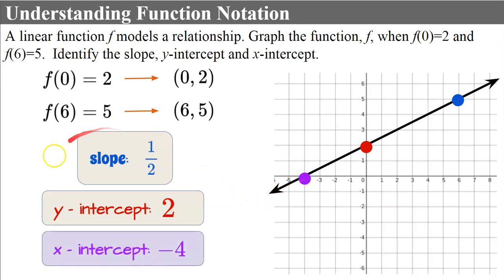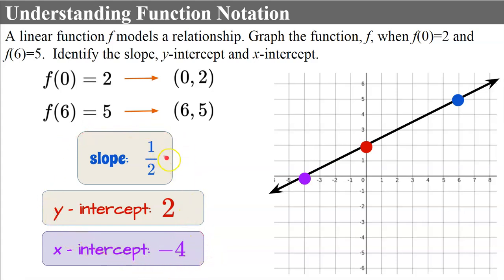So we've identified slope, y-intercept, and x-intercept. Remember, these are all ways to describe our line.